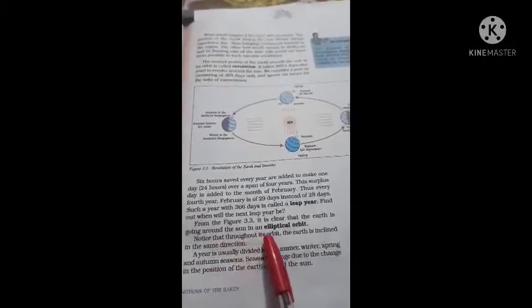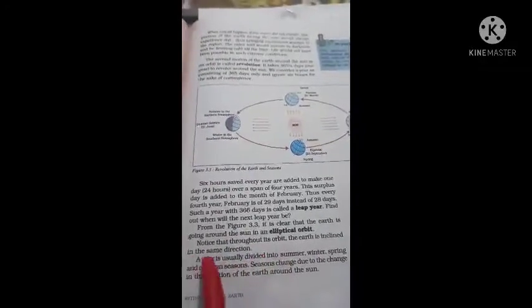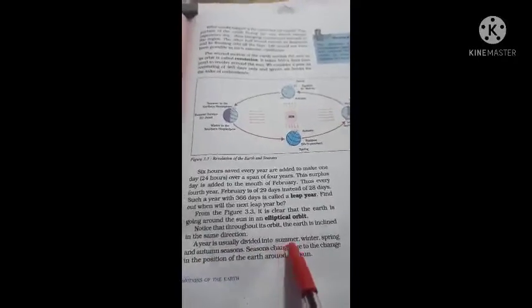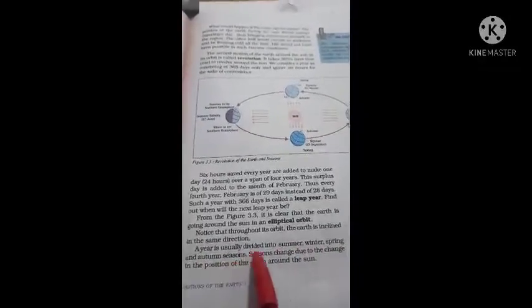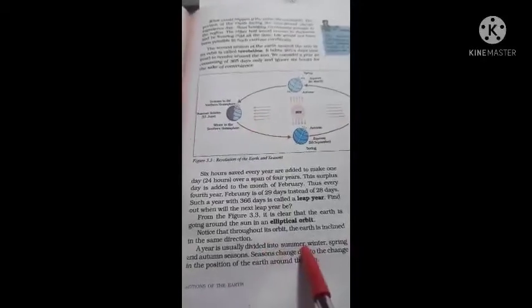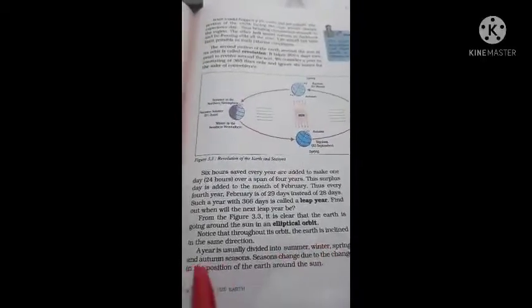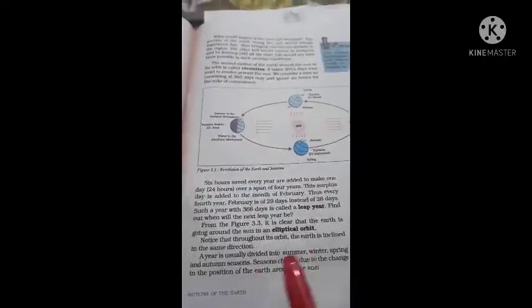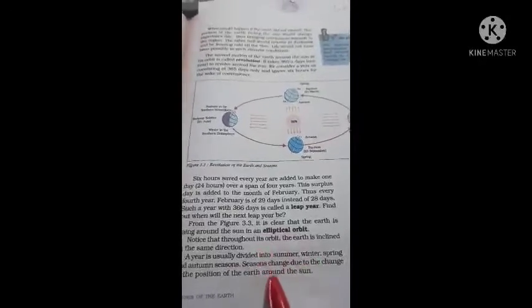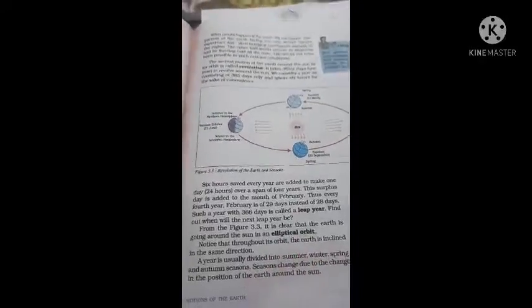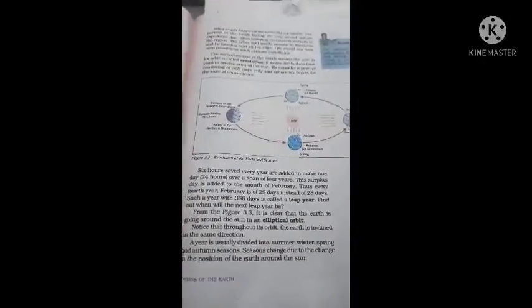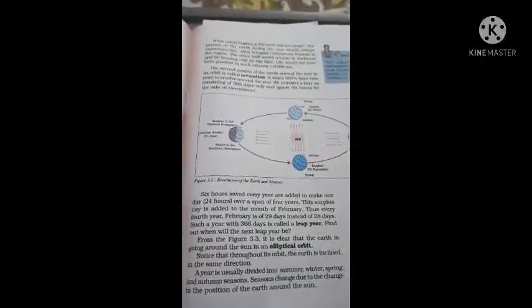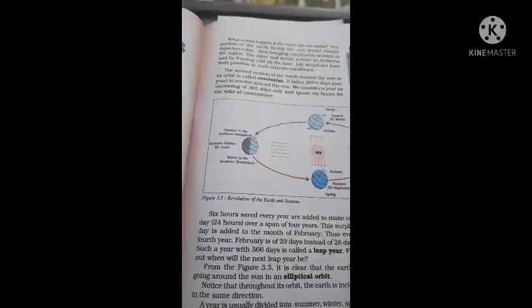Notice that throughout its orbit, the Earth is inclined in the same direction. A year is usually divided into summer, winter, spring, and autumn seasons. Seasons change due to the change in the position of the Earth around the Sun — seasons इसलिए change होते हैं क्योंकि sun के सामने Earth की position change होती रहती है। We will continue in our next video — till then, thank you and take care.